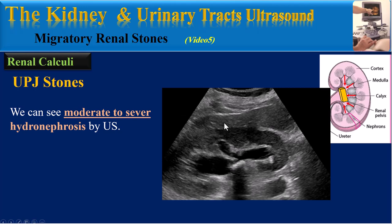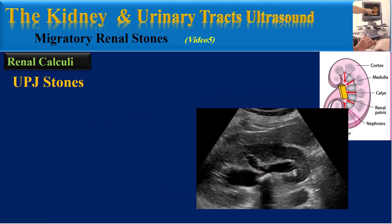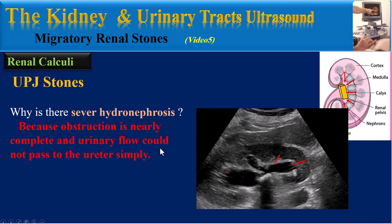When the patient presents for ultrasound, we can find moderate to severe hydronephrosis, as you can see in this trans-abdominal ultrasound image. We can see a large UPJ stone. There is severe hydronephrosis because the obstruction is nearly complete and urinary flow could not pass to the ureter.